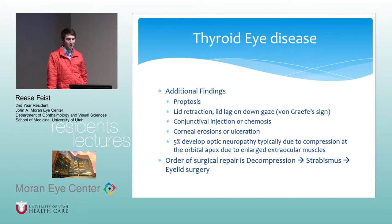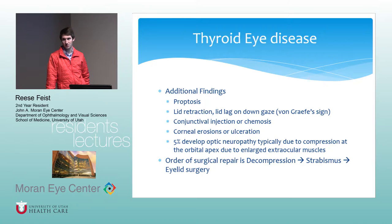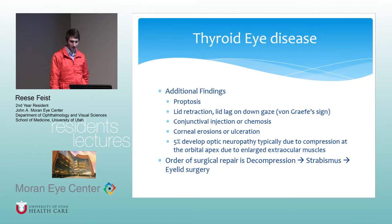Additional findings include proptosis, lid retraction, lid lag on down-gaze (von Graefe sign), conjunctival injection or chemosis. Always examine the cornea — patients can get significant corneal erosions or ulceration. About five percent develop optic neuropathy due to compression of the orbital apex by enlarged extraocular muscles. For surgical repair, the order to proceed is: decompression first, then strabismus, then eyelid surgery last — because eyelid surgery can change the position of extraocular muscles worked on during strabismus surgery and worsen strabismus.